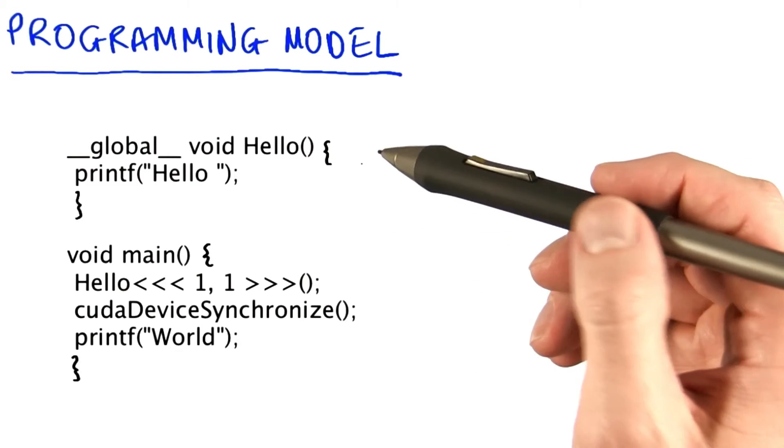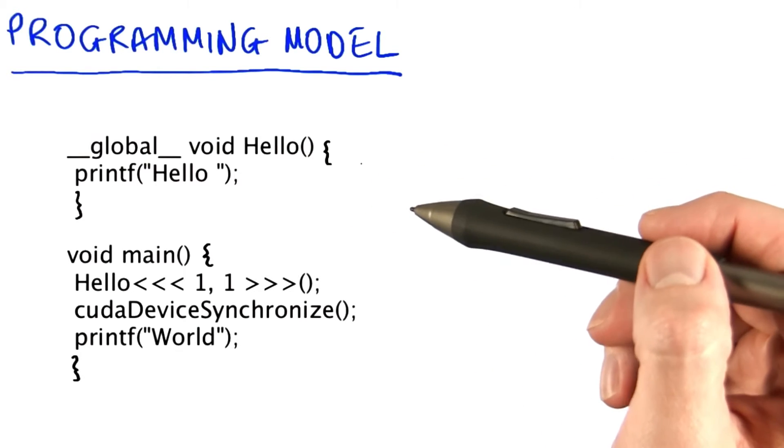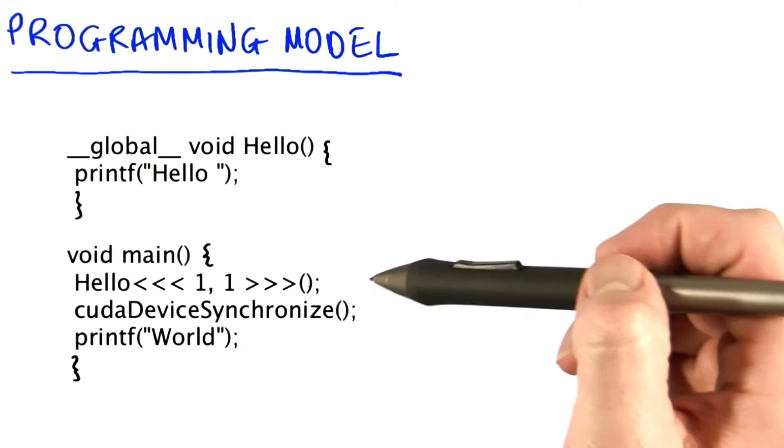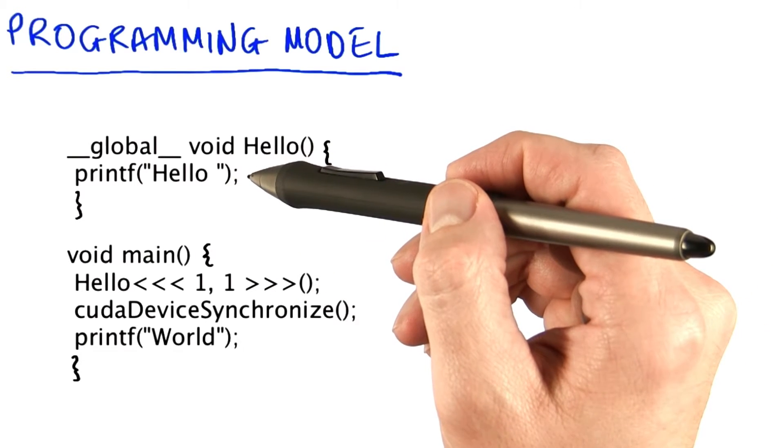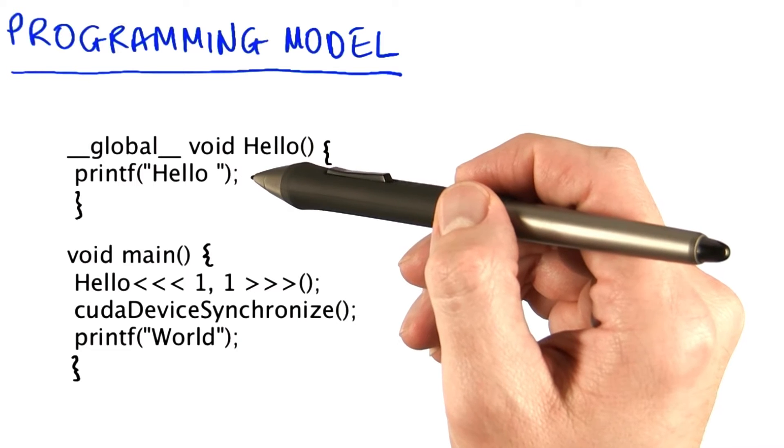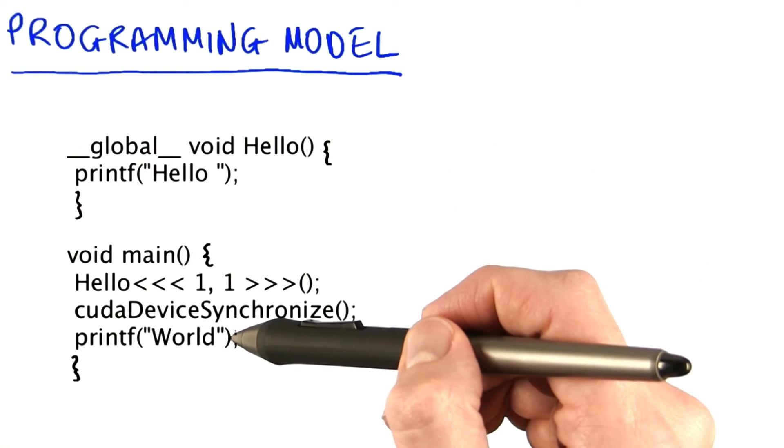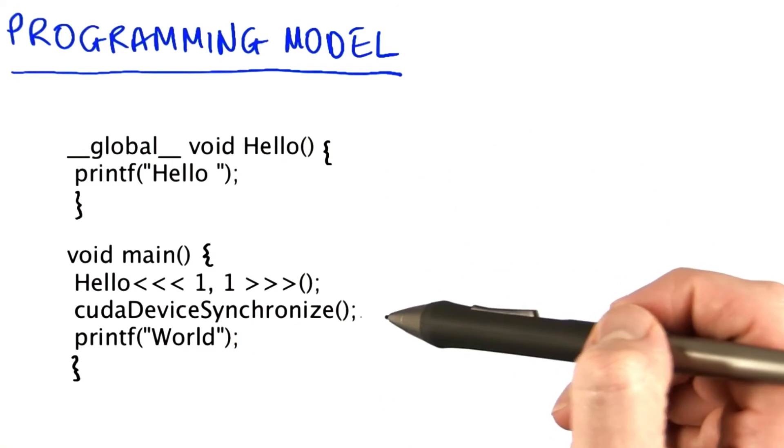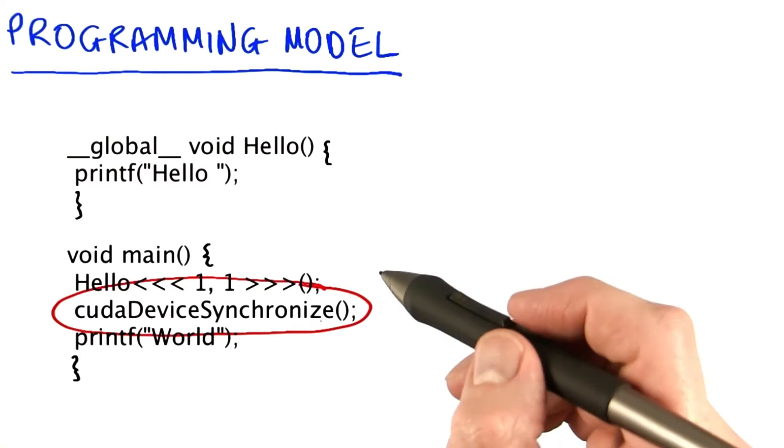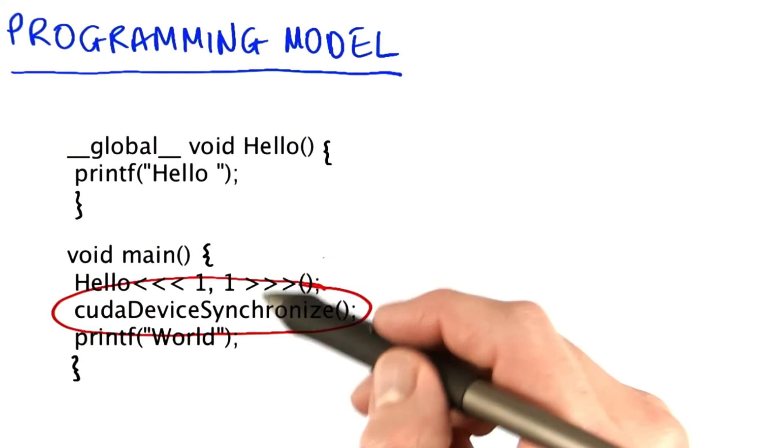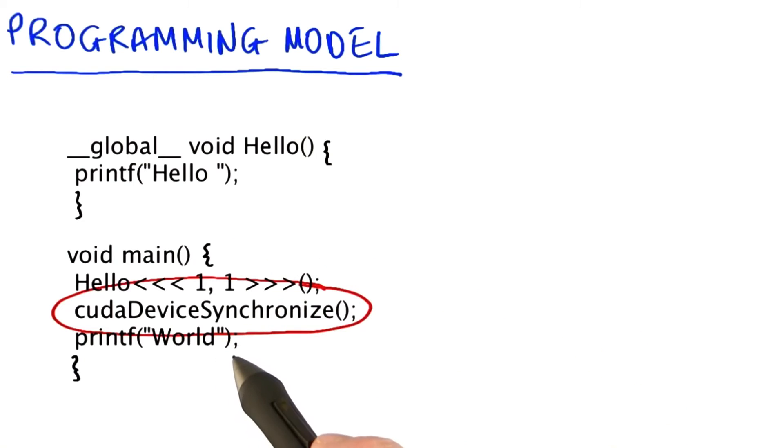What I've got here is a typical Hello World in CUDA. With this version of Hello World, I'm launching a kernel to print Hello from the GPU, and then I'm following it up with a print of World from the CPU. Note how I need the synchronization here after the launch to ensure that the Hello happens first, that it's flushed out to the screen, and then the World will print.